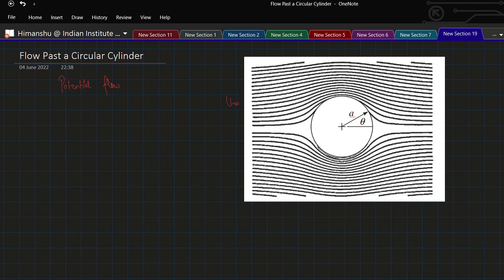The two elementary flows are uniform flow plus a doublet at the origin. The uniform flow will be given by u infinity times Z, and the doublet is given by M by Z, where M is the strength of the doublet. The complex potential is phi of Z: this is of the uniform flow, this is of the doublet.